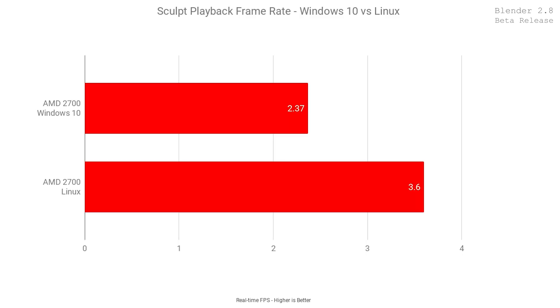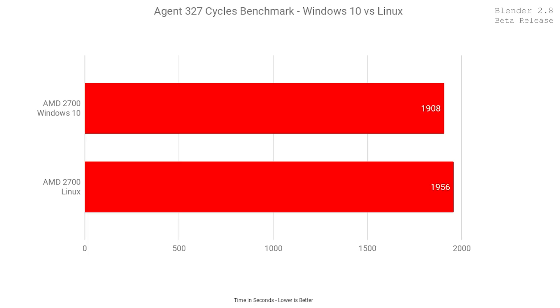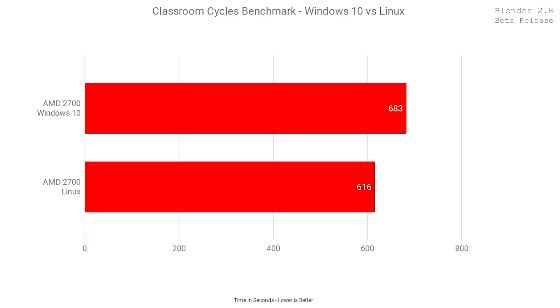The sculpting real-time playback was 41% faster on Linux — much better real-time performance in the Blender viewport. Animation playback was 34 FPS on the Ryzen system on Linux — 77% faster real-time animation playback compared to Windows. This could be a bug with Blender or Windows, but right now real-time playback is way superior on Linux. The Agent 327 Cycles benchmark was actually 2.5% slower on Linux for AMD, which is unusual since Linux is typically 10–20% faster for Cycles rendering. The classroom benchmark was 10% faster on Linux — more in line with expectations. Overall, the Linux setup was 22% faster than Windows on our AMD system.